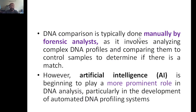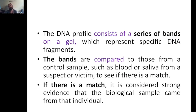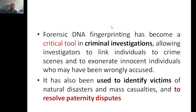DNA comparison is typically done manually by forensic analysts. However, artificial intelligence is making advances in every field, and in the future AI can be used for DNA analysis. The DNA profile consists of a series of bands on a gel representing specific DNA fragments. These bands are compared to a control sample - X is compared with A, B, and C - and if there is a match, it is considered strong evidence that the biological sample came from that individual. DNA fingerprinting has become a critical tool in criminal investigations, allowing investigators to link individuals to crime scenes.